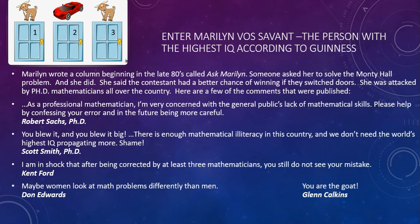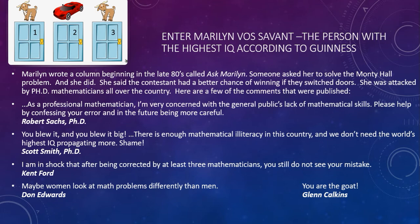She solved it. She said the contestant had a better chance of winning if they switched doors. She was attacked by PhD mathematicians all over the country. One wrote: 'As a professional mathematician, I'm very concerned with the general public's lack of mathematical skills. Please help by confessing your error and in the future being more careful.' Another wrote: 'You blew it and you blew it big. There is enough mathematical illiteracy in this country and we don't need the world's highest IQ propagating more. Shame.' The next week she came back and said she still thought she was right, and the responses kept coming: 'Maybe women look at math problems differently than men. And you are the goat' — probably the lamest of the comments.